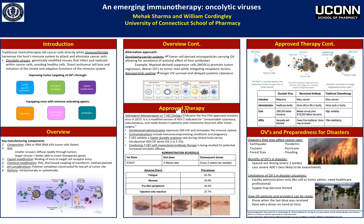Oncolytic viruses work through direct antitumor cell lysis and initiation of innate and adaptive functions of the immune system. Over here on the poster we have just a couple boxes showing how the OVs — oncolytic viruses — work. They work through tumor-specific promoters, viral gene knockouts, and capsid modification, and by equipping viruses with immune activating agents.